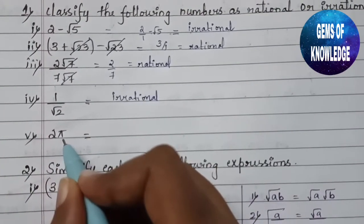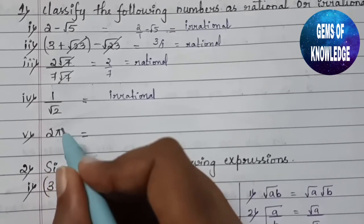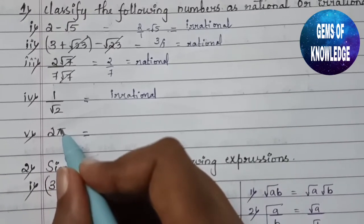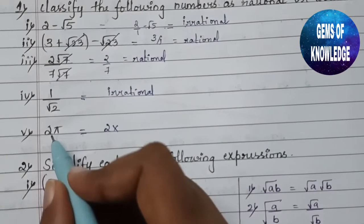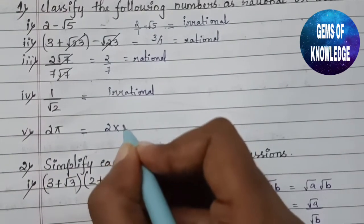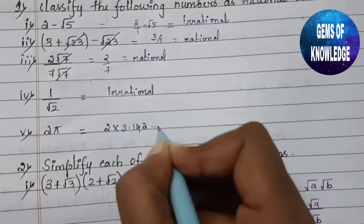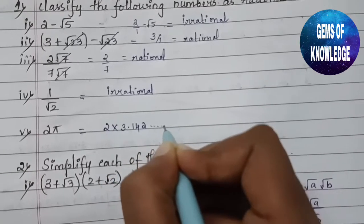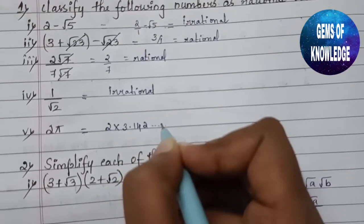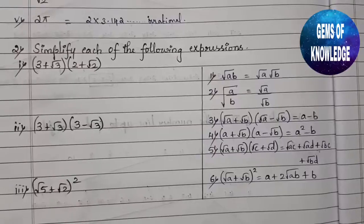The next one is 2 pi. As you know, pi is an irrational number because its value is 3.142 and it continues without terminating. Therefore, 2 into pi is also an irrational number.